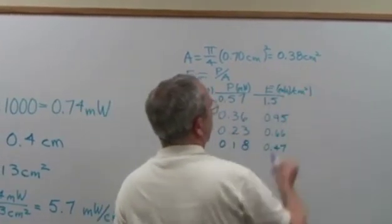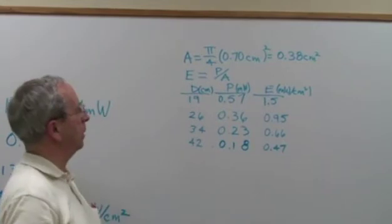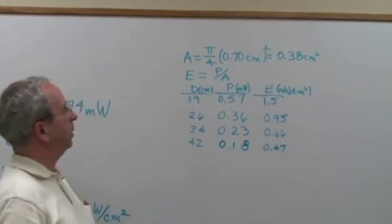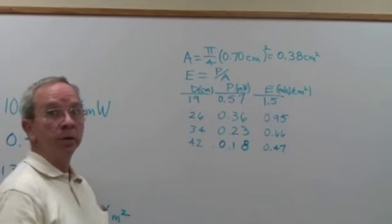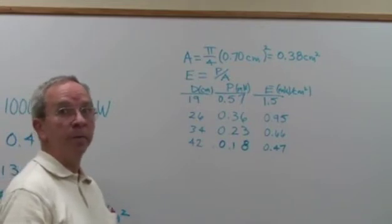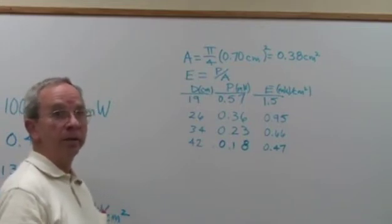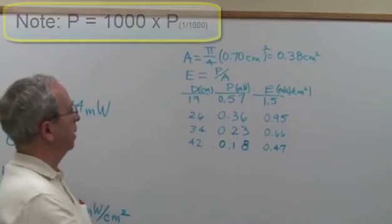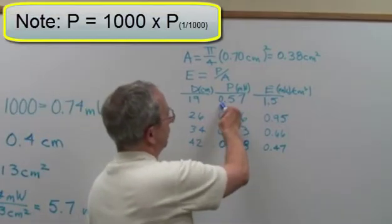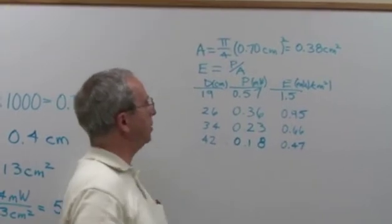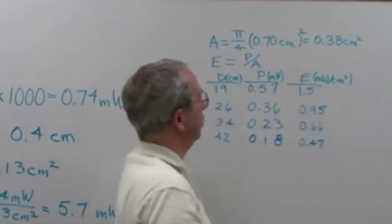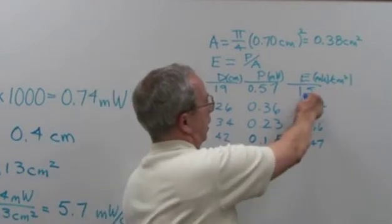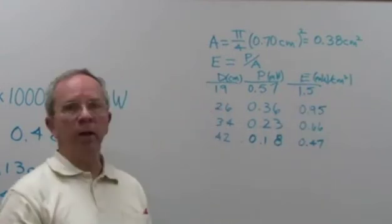And to calculate the irradiance at those different positions, we calculate the ratio of the power divided by the area of that detector, just like before. So we measure the power of 0.57 milliwatts. And we divide that by the area of 0.38 centimeters squared to get an irradiance of 1.5 milliwatts per centimeter squared.